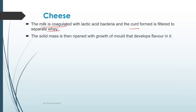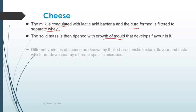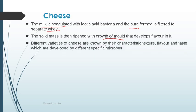This solid mass is then ripened with the growth of molds — different types of fungi — which develop different types of flavors in the cheese. Different varieties of cheese are known by their characteristic texture, flavor, and taste, which are developed by specific microorganisms grown on them.